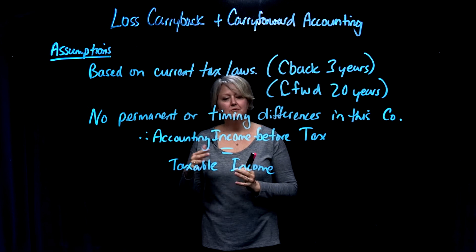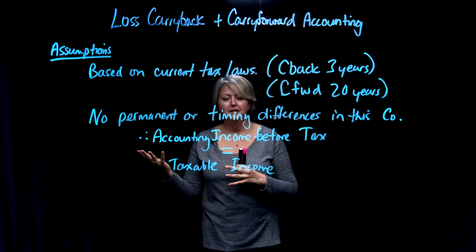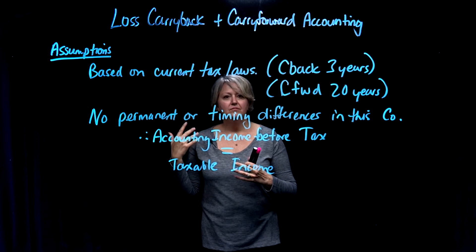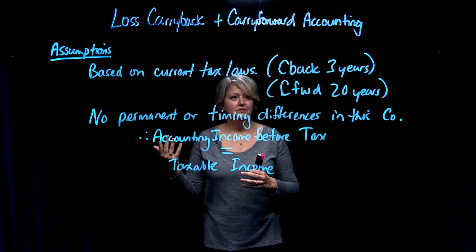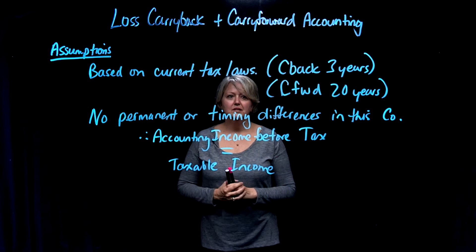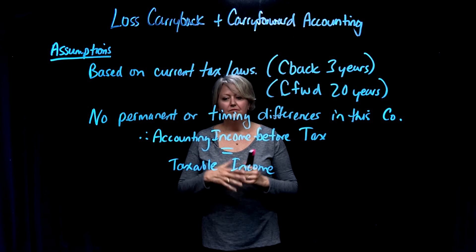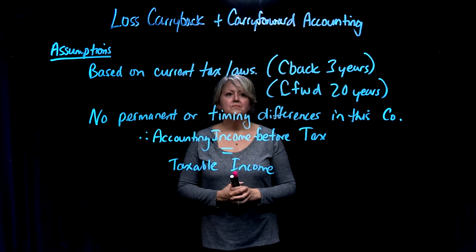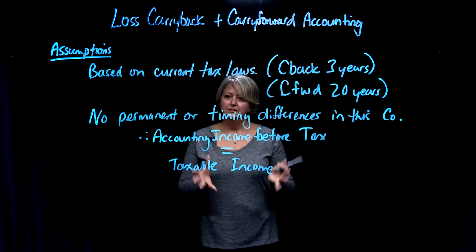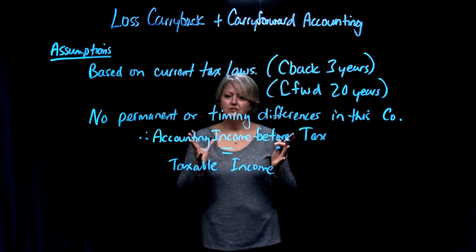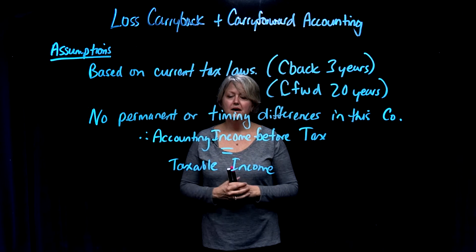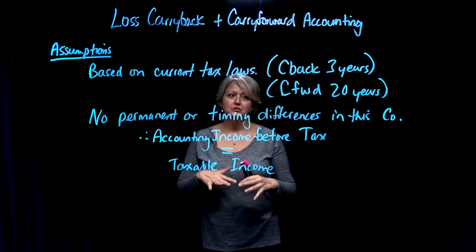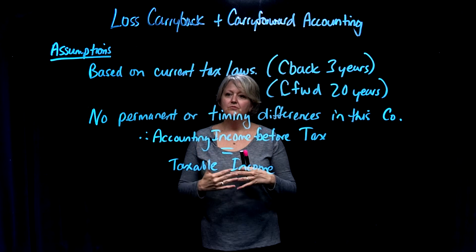So corporations would look back three years ago and say, did I pay any money then? And if I did, ask for some money back. And if that covered off the whole loss, then everything's done — you ask for that money back this year. If there was still more loss to apply, then you would look at two years ago and one year ago. Now, if you still have tax losses that you did not use up by carrying them back to the prior three years, then you hold on to those and make a note in your tax return and carry them forward.